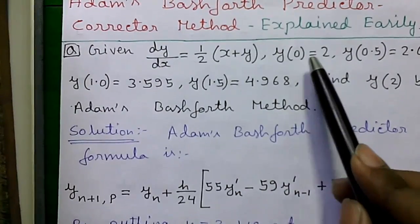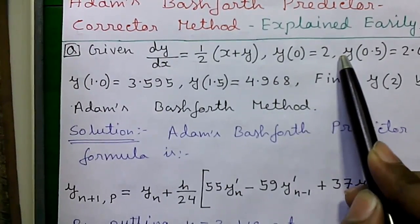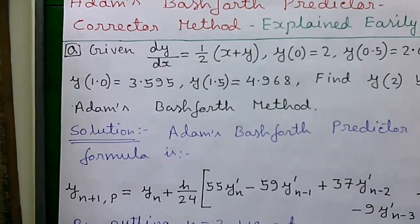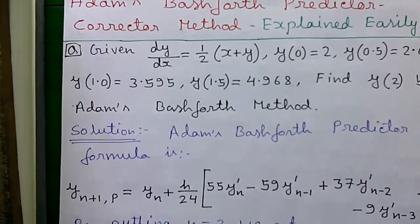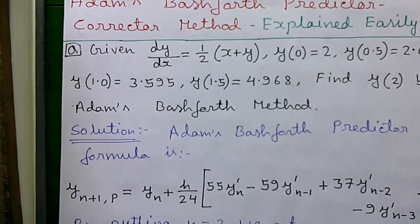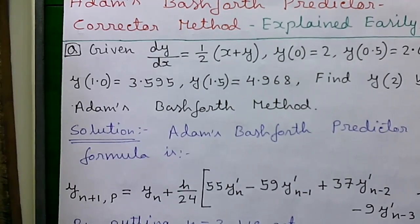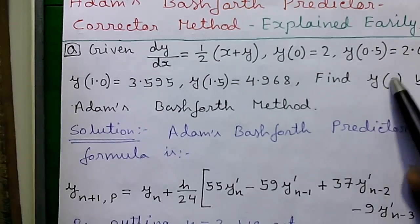Remember in some questions only the first value may be given. The remaining three values you may have to find it out by Taylor series method. And then we can proceed to the normal solution as usual. In our case all the four values are given.